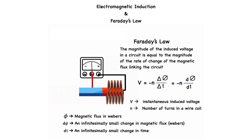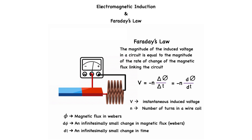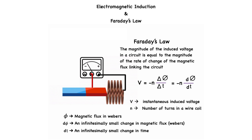V is of course the instantaneous induced voltage. Phi (Φ) is the magnetic flux in webers. dΦ is the change of magnetic flux, also in webers, and dt is the change of time in seconds.